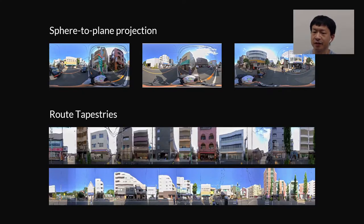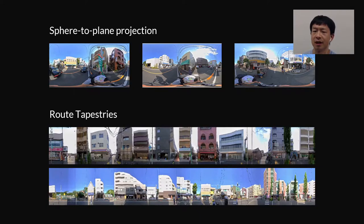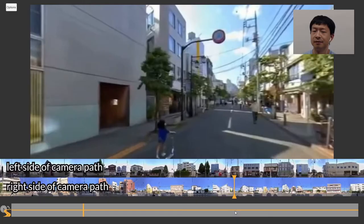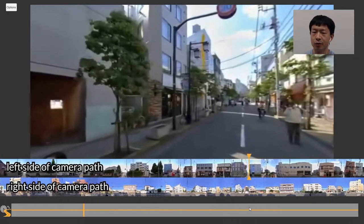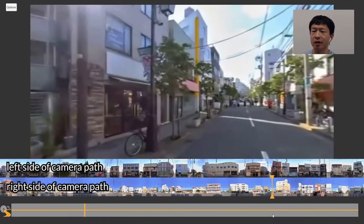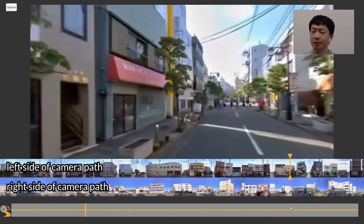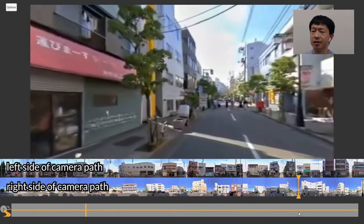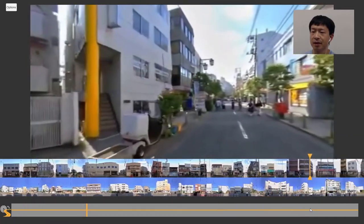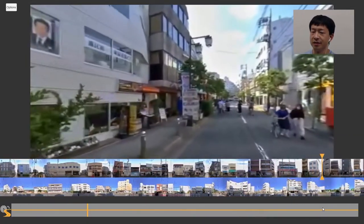To facilitate the navigation of 360 virtual tour videos, we propose using Root Tapestries. Root Tapestries are strip-shaped video previews showing continuously captured scenes along the camera route. In the Root Tapestry previews, the target coffee shop is readily visible without much visual distortion, and a viewer can find it relatively easily.